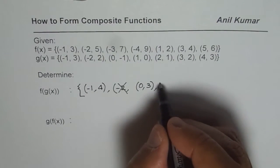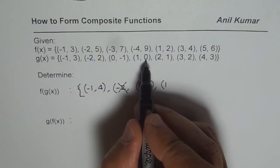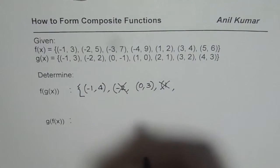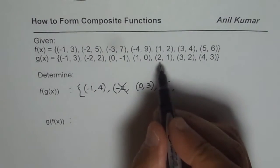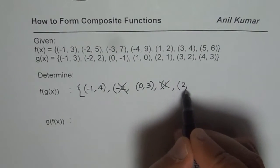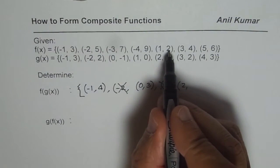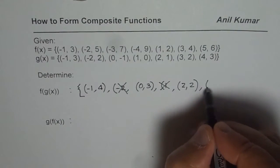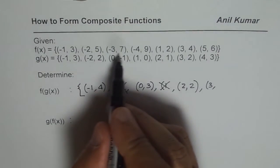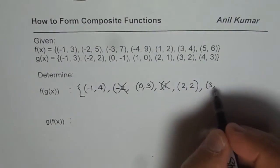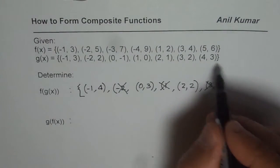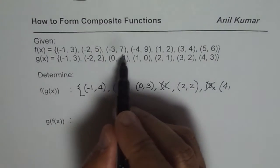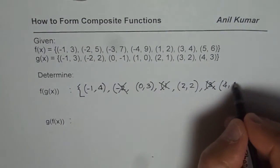For x equals 1, the output of g is 0, and 0 cannot be an input for f of x, so that is not permitted. For x equals 2, the output is 1, and f of 1 is 2 — so that is OK. For x equals 3, output is 2, and f of 2 is not there, so that cannot be completed. For x equals 4, output is 3, and f of 3 is 4, so we get the point (4, 4).